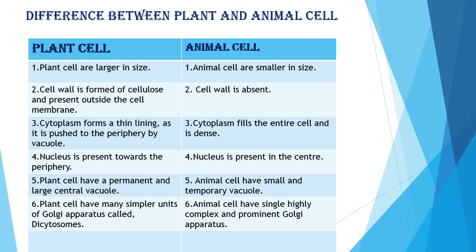In animal cells, cytoplasm fills the entire cell and is dense. The nucleus is present towards the periphery in plant cells, pushed near the boundary by the vacuole, but in animal cells the nucleus is present in the center. Plant cells have a permanent large central vacuole, whereas animal cells have a small or temporary vacuole and sometimes no vacuole at all. Plant cells have many simpler units of Golgi apparatus called dictyosomes, but animal cells have a single highly complex and prominent Golgi apparatus.